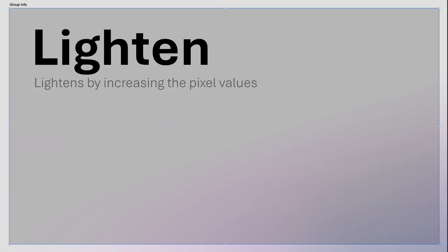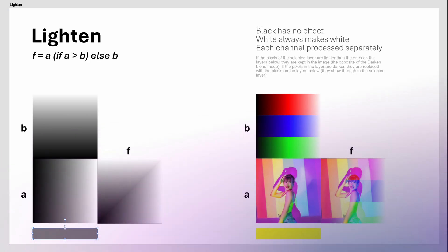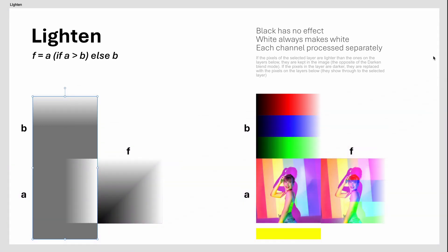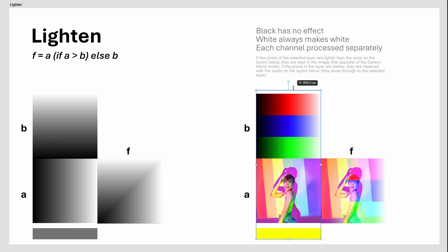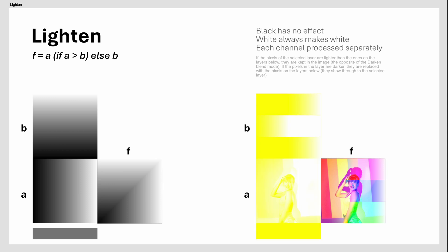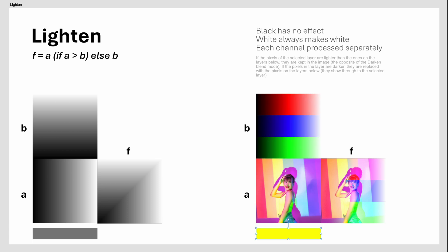The Lighten Group. This group consists of blend modes which lighten the image by either keeping the lightest pixel values or by increasing the pixel values. The Lighten Blend Mode is the opposite of the Darken Blend Mode — only the higher channel values will be used. The result is that only lighter values from the active layer will be shown. Useful for overlaying bright elements or giving a tint of color to the shadows.